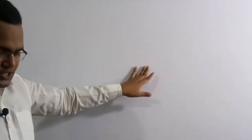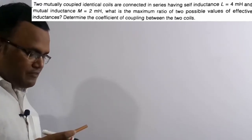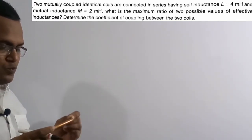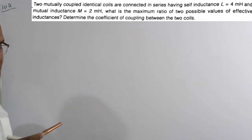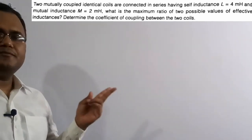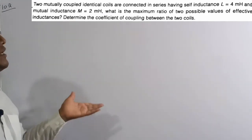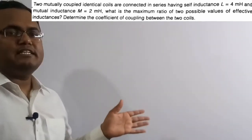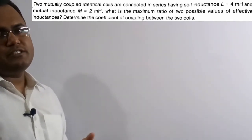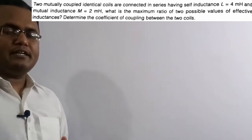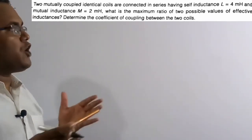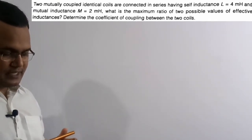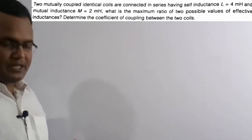Now the tenth question: two mutually coupled identical coils are connected in series with self-inductance L = 4 mH and mutual inductance M = 2 mH. Find the maximum ratio of the two possible values of effective inductance, and determine the coefficient of coupling. This question is from IES Mains 2015 for 10 marks.